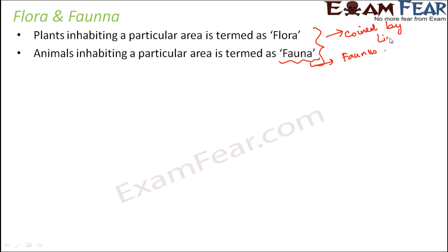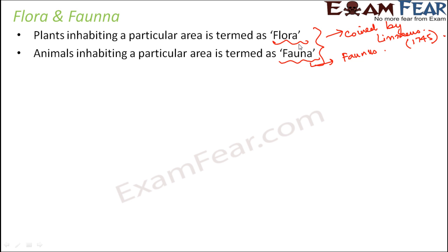The terms flora and fauna were coined by Linnaeus — the same scientist who was also involved in the classification of plants and animals — somewhere around 1745. So when you talk about one particular area, for instance the Panchmari biosphere reserve, the plants present there are called its flora and the animals present there are called its fauna. That is how we use these terms.